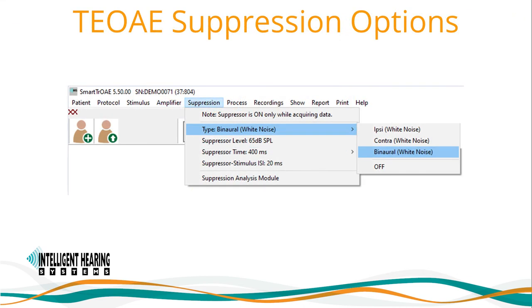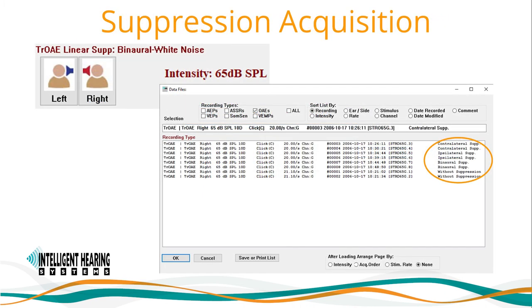There are four suppression options: no suppression or baseline; contralateral suppression, where the masker signal is delivered to the opposite ear from the one being tested; ipsilateral suppression, when the masker signal is delivered to the same ear being tested; and binaural suppression, where the masker signal is delivered to both ears. Per Berlin and colleagues, binaural masking noise is most effective in suppressing otoacoustic emissions. Once the parameters are set, click right or left on the main screen to acquire the data. IHS recommends right-clicking on the time domain waveform and adding a comment with the type of suppression used — this comment will appear in the load recordings display window and ease file selection during comparison and analysis.